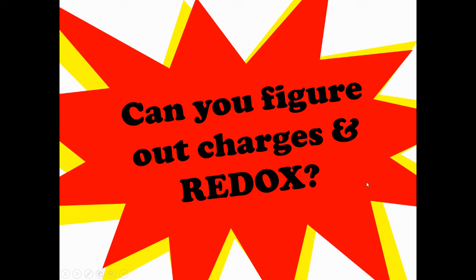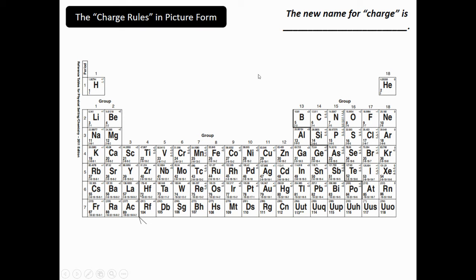Hey there, this is Mr. Young and I'm going to take you through some examples of figuring out the charges, or oxidation numbers as we call them, as we enter the world of redox. These are the rules for charge in picture form. Remember, where you see the term 'oxidation number,' that just means the charge on an atom or an ion that's in a compound.